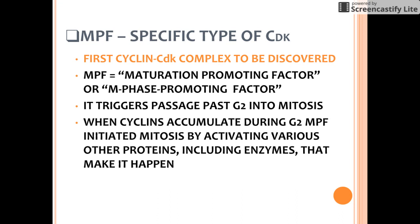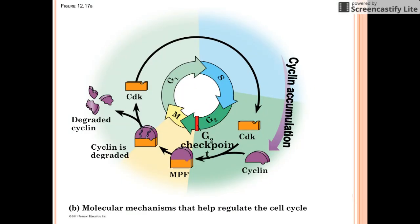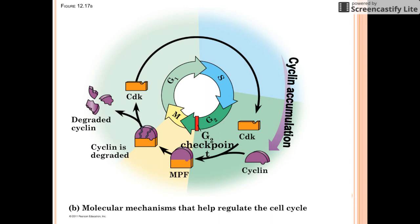This complex initiates mitosis by activating a bunch of other proteins that make the process happen. Here's another graphic: CDK and cyclin come together to form MPF, which triggers the cell cycle to proceed into mitosis causing nuclear division. CDK stays constant and the cyclin degrades and goes away, and then it's a continuous cycle of cyclin accumulation, CDK binding, and MPF formation.